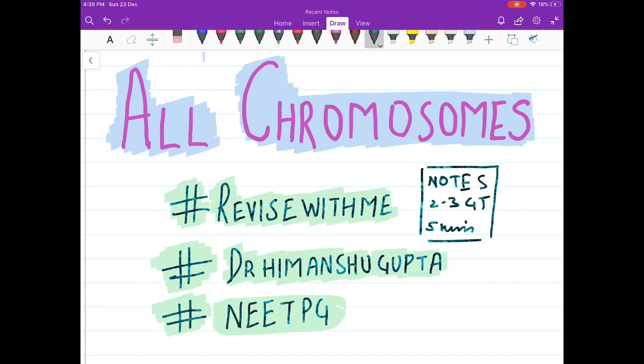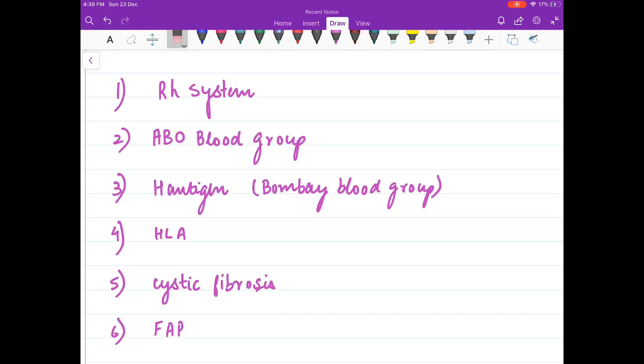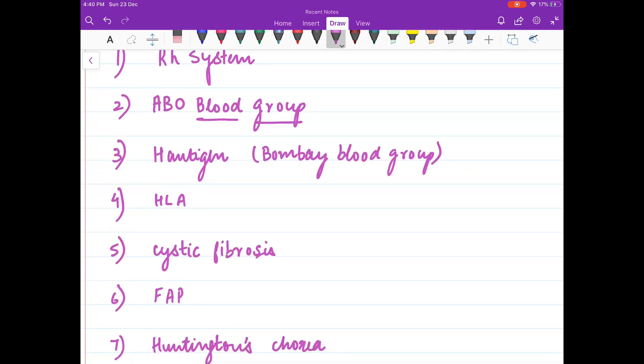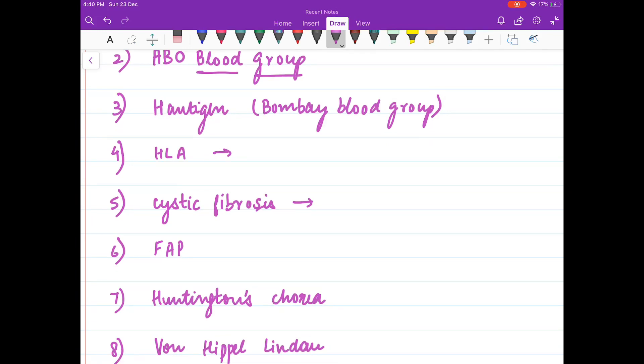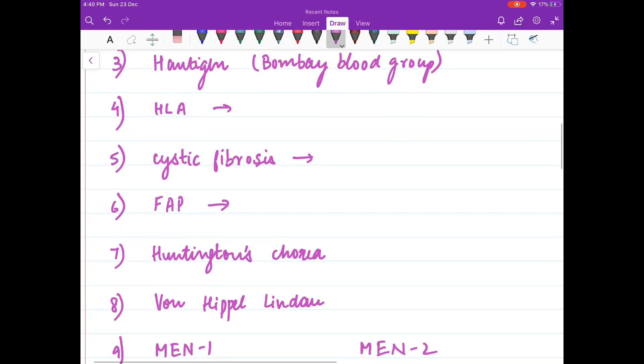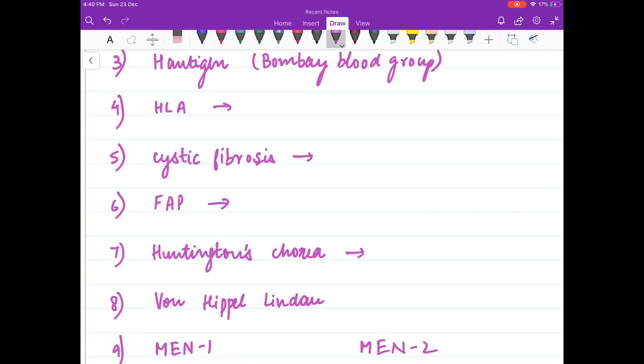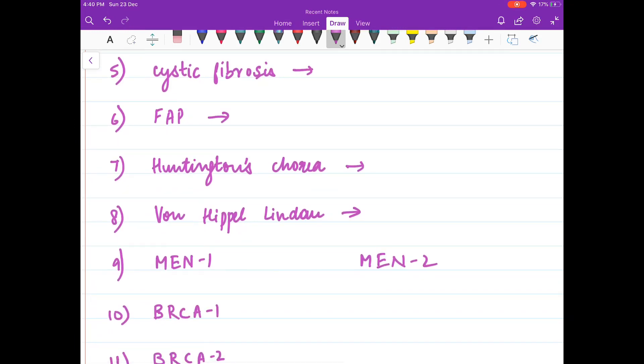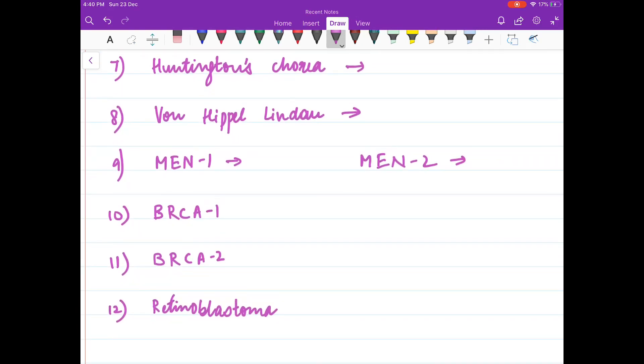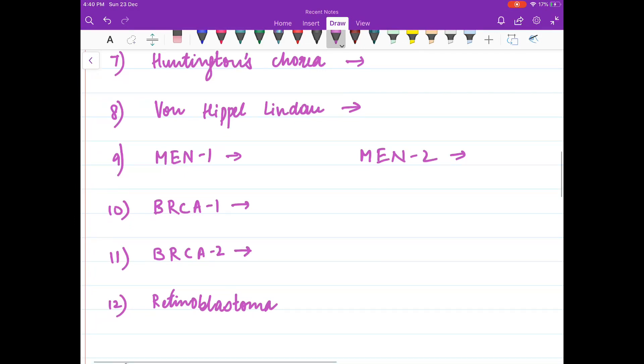Take out five minutes from your day to revise the video that I'm going to post. So let us begin now. Rh system is present on chromosome number? ABO blood group?